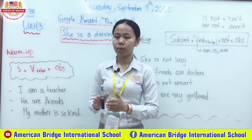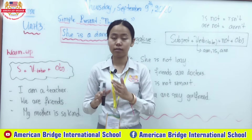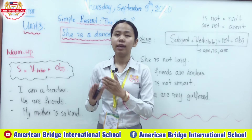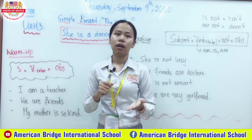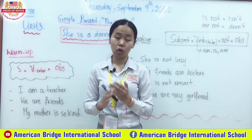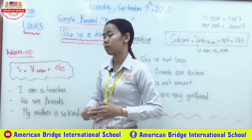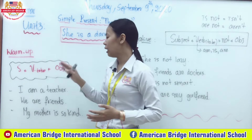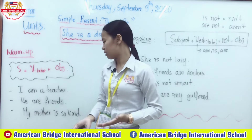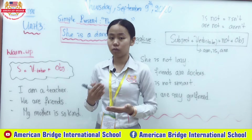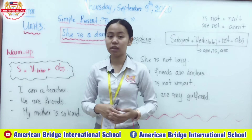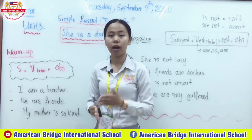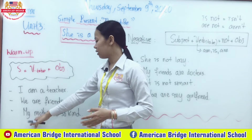I don't want you to be confused between simple present and simple present with the verb 'be.' For regular simple present, we have Subject + verb + object — like 'I speak English' — without the verb 'be.' But this time we use the verb 'be': am, is, or are. For example, 'We are friends' — 'we' is the subject, 'are' is the verb 'to be,' and 'friends' is the object. You cannot say 'we is friends' or 'we am friends' — only 'we are friends.'